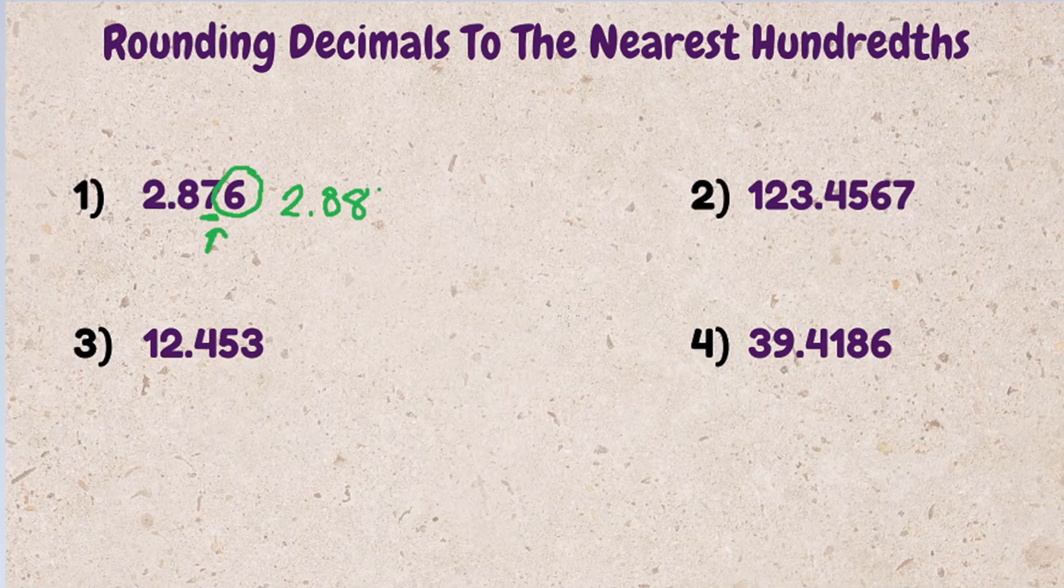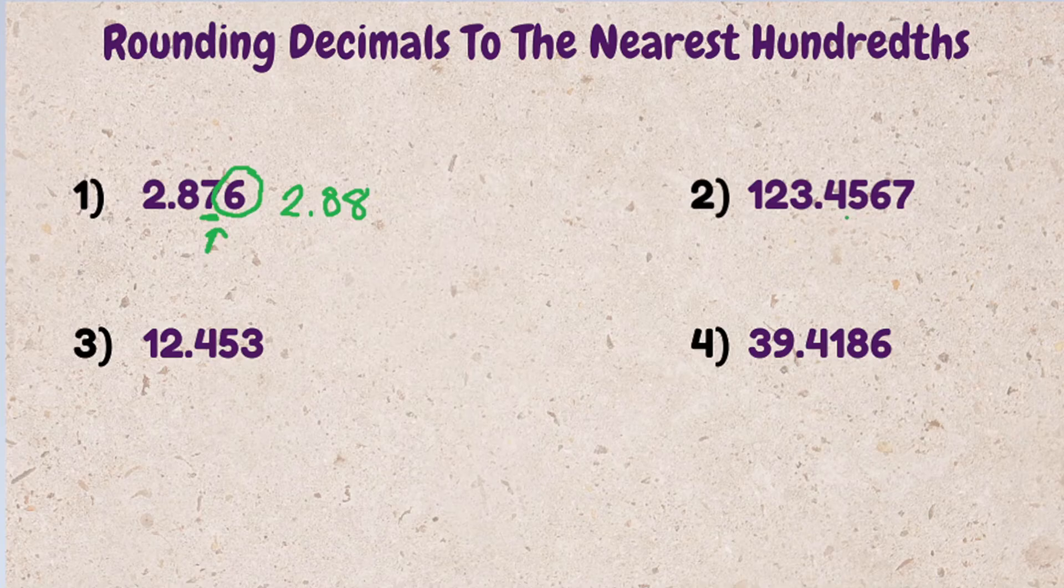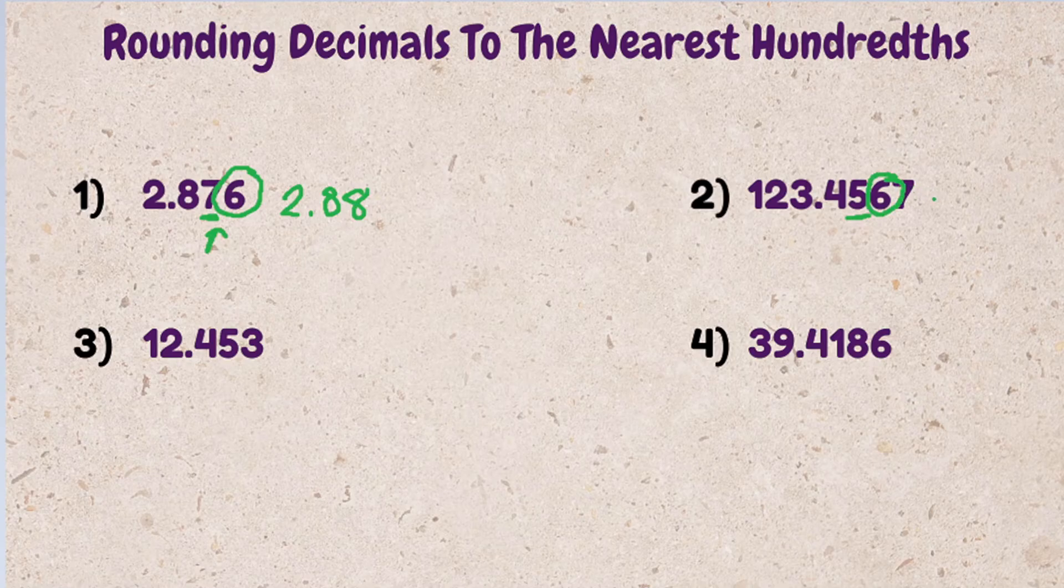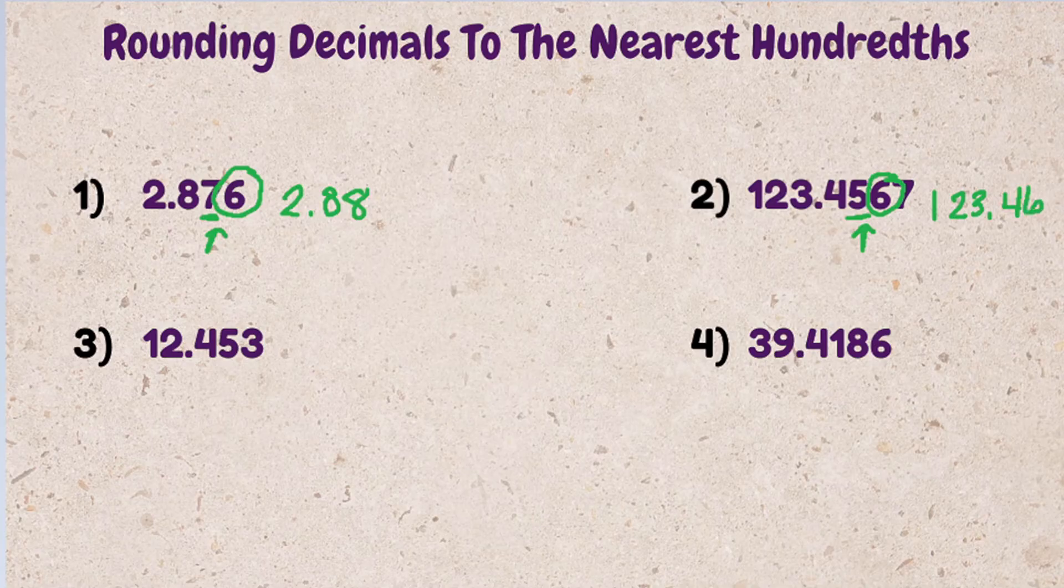Example two, 123.4567. Four is in the tenth spot. Five is in the hundredth. We look at the number to the right. If it's five or greater, we round up. 123.4567 rounds to 123.46.